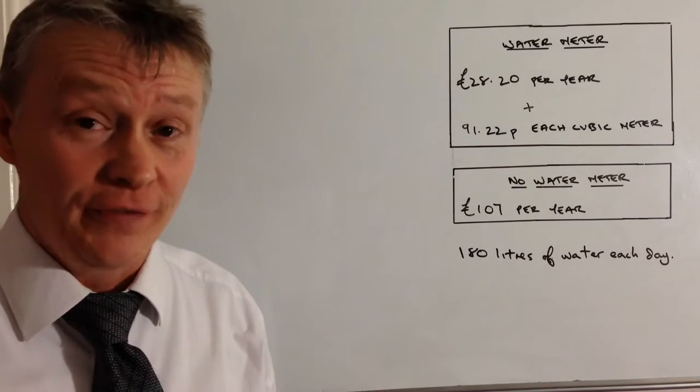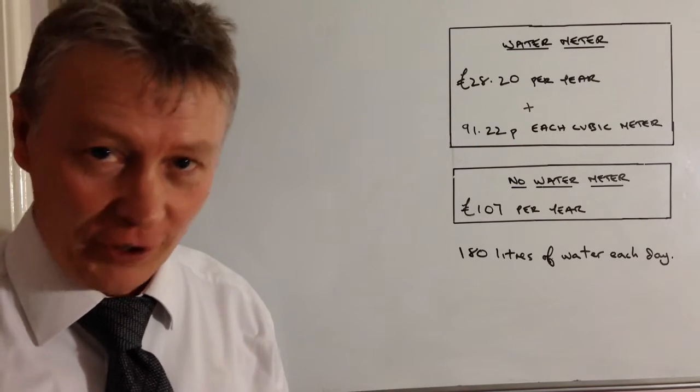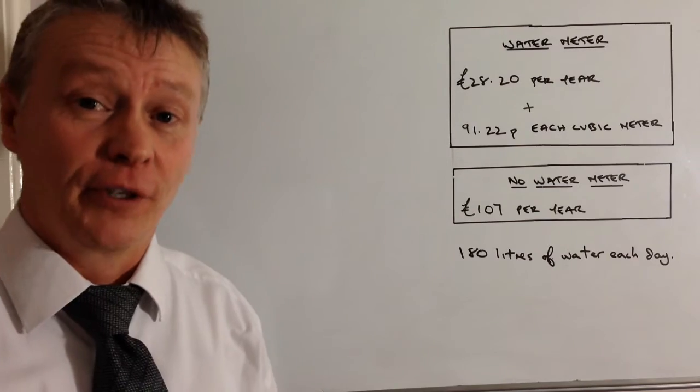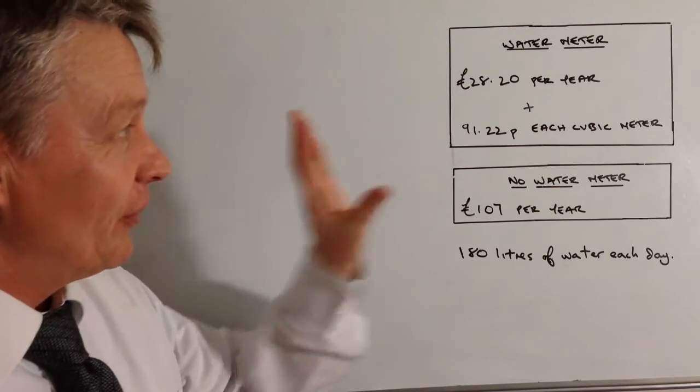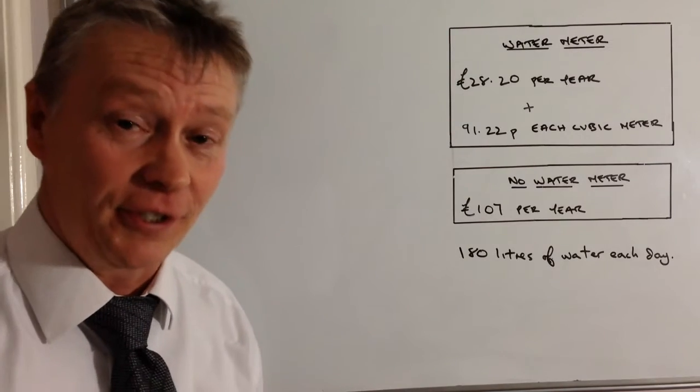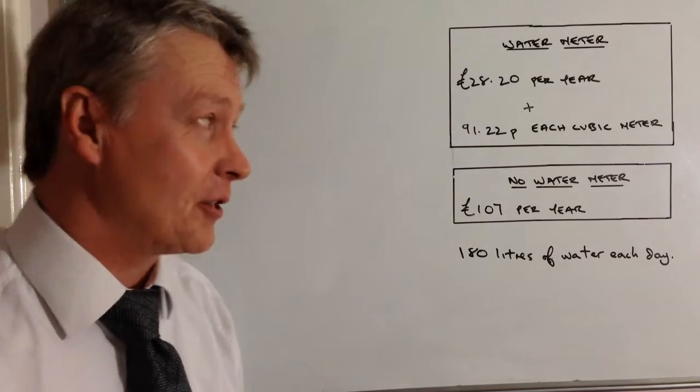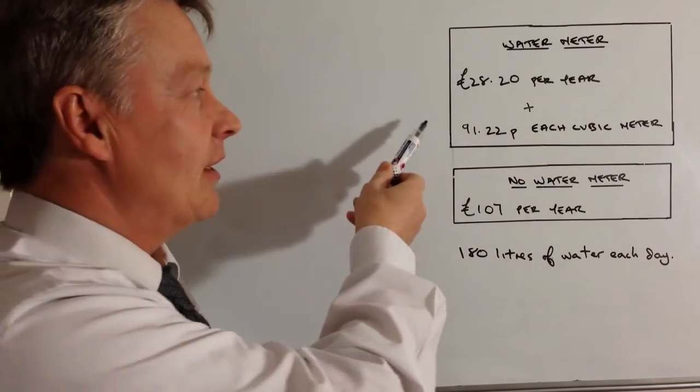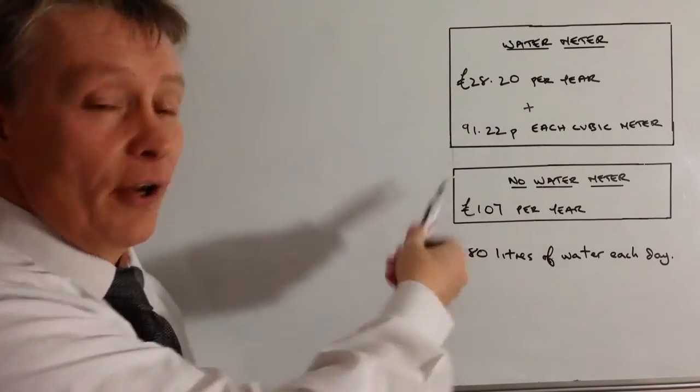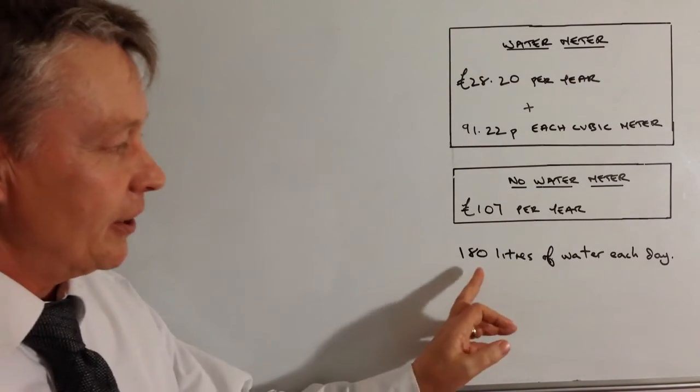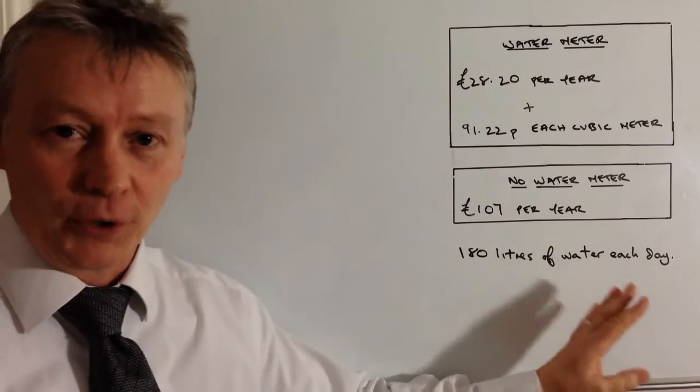Hi, so this is the third video in the playlist dealing with functional maths and if you click on the link below you'll be able to go through to the particular question that this relates to. There are quite a few different skills that you require in this type of question but basically it boils down to a choice between having a water meter and those are the charges or not having a water meter and that's the charge and this particular guy uses 180 litres of water per day.